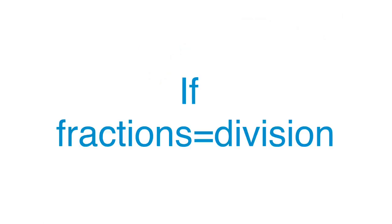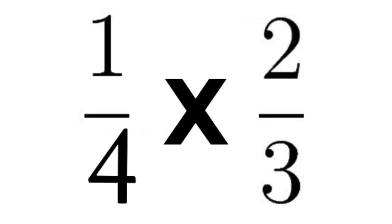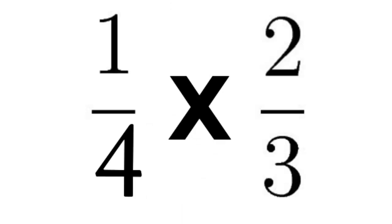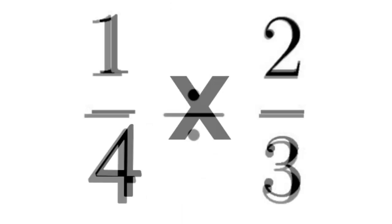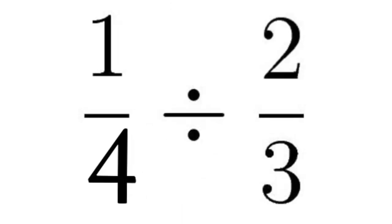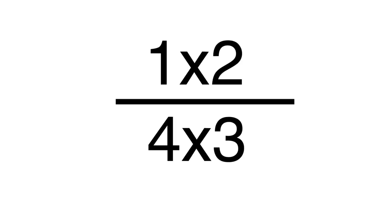Because addition cheated on multiplication with subtraction. Anyways, if fractions are division, that means if I had the problem 1 over 4 times 2 over 3, it's the same as 1 divided by 4 times 2 divided by 3, meaning I have both division and multiplication in the same problem. That means I can change the problem to look like this.